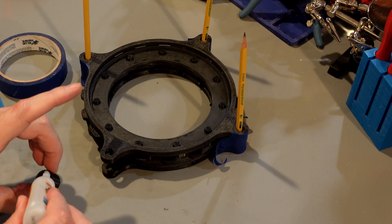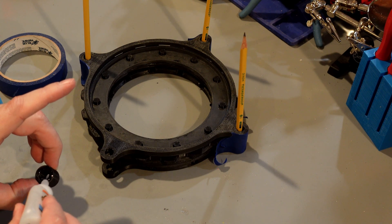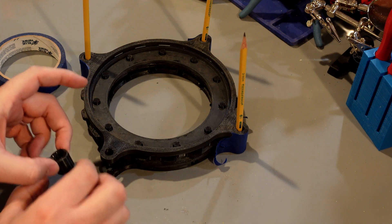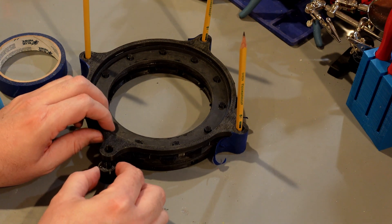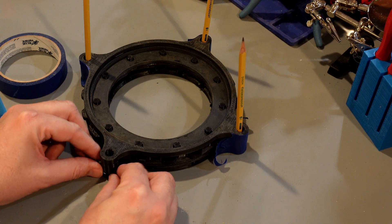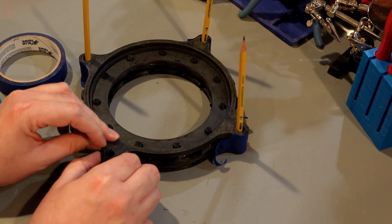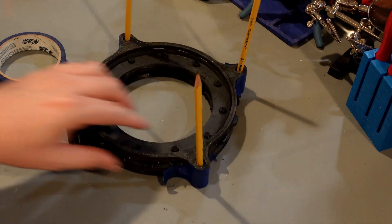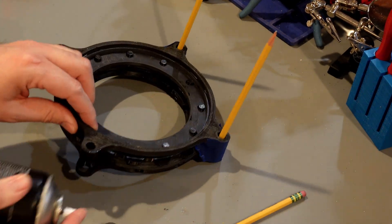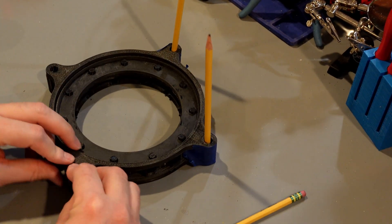Now we're just going to put some super glue on these spacers. Probably putting a little bit too much there, but the first one of these that I built I didn't use enough and they kept coming loose. So now we're just going to go around and repeat the process three more times.